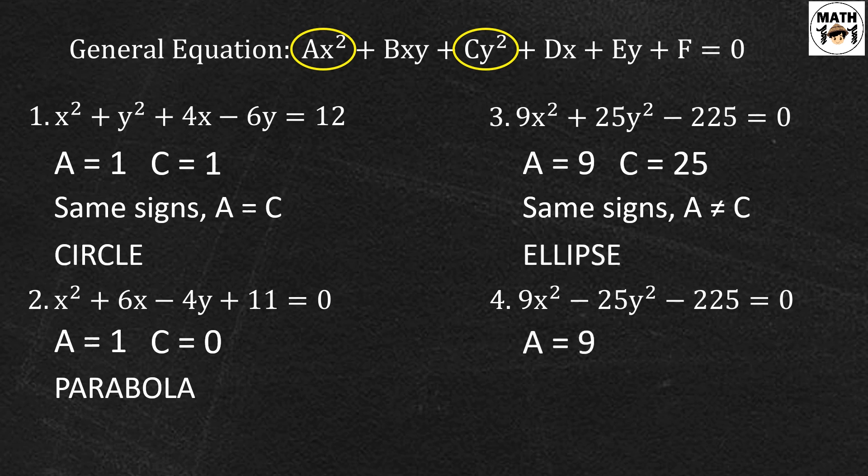And lastly, a is equal to 9 but c is equal to negative 25. So hindi sila equal. Tapos, magkaiba pa sila ng sign. Therefore, this represents a hyperbola.